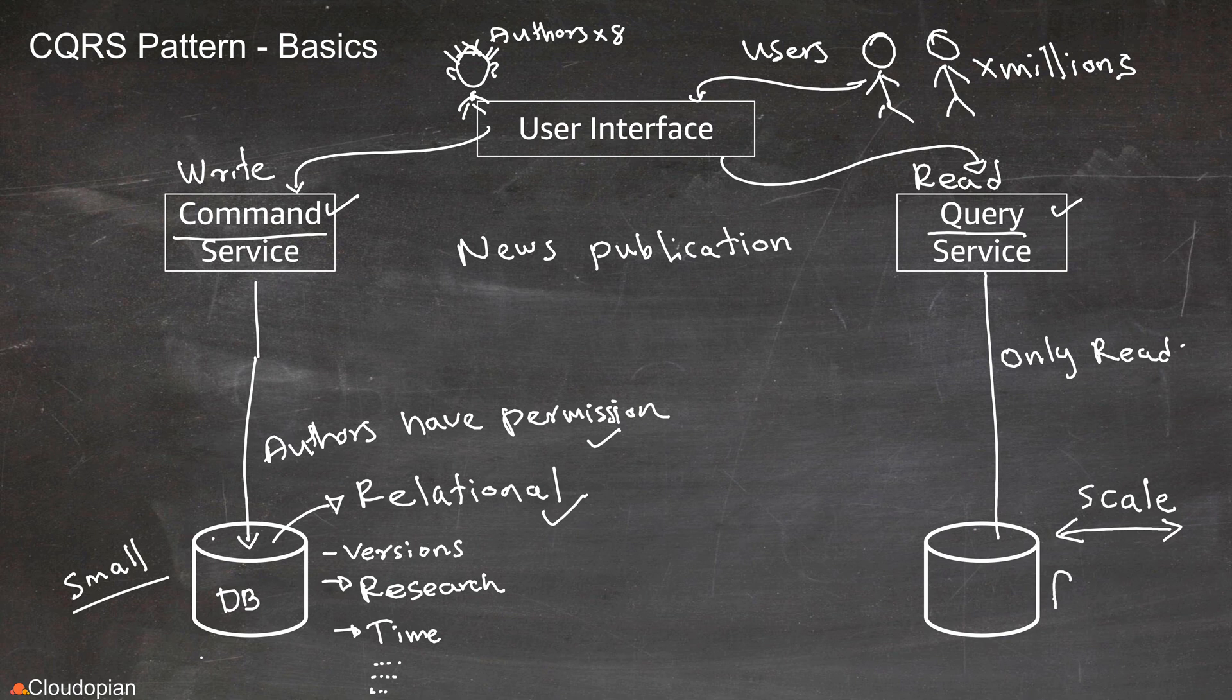These databases can use different database technology. For example, your read service or the query service may use a simple file system. Because your command service wants to maintain a lot of background information, it may use a relational database. So the technology of these databases can be different.